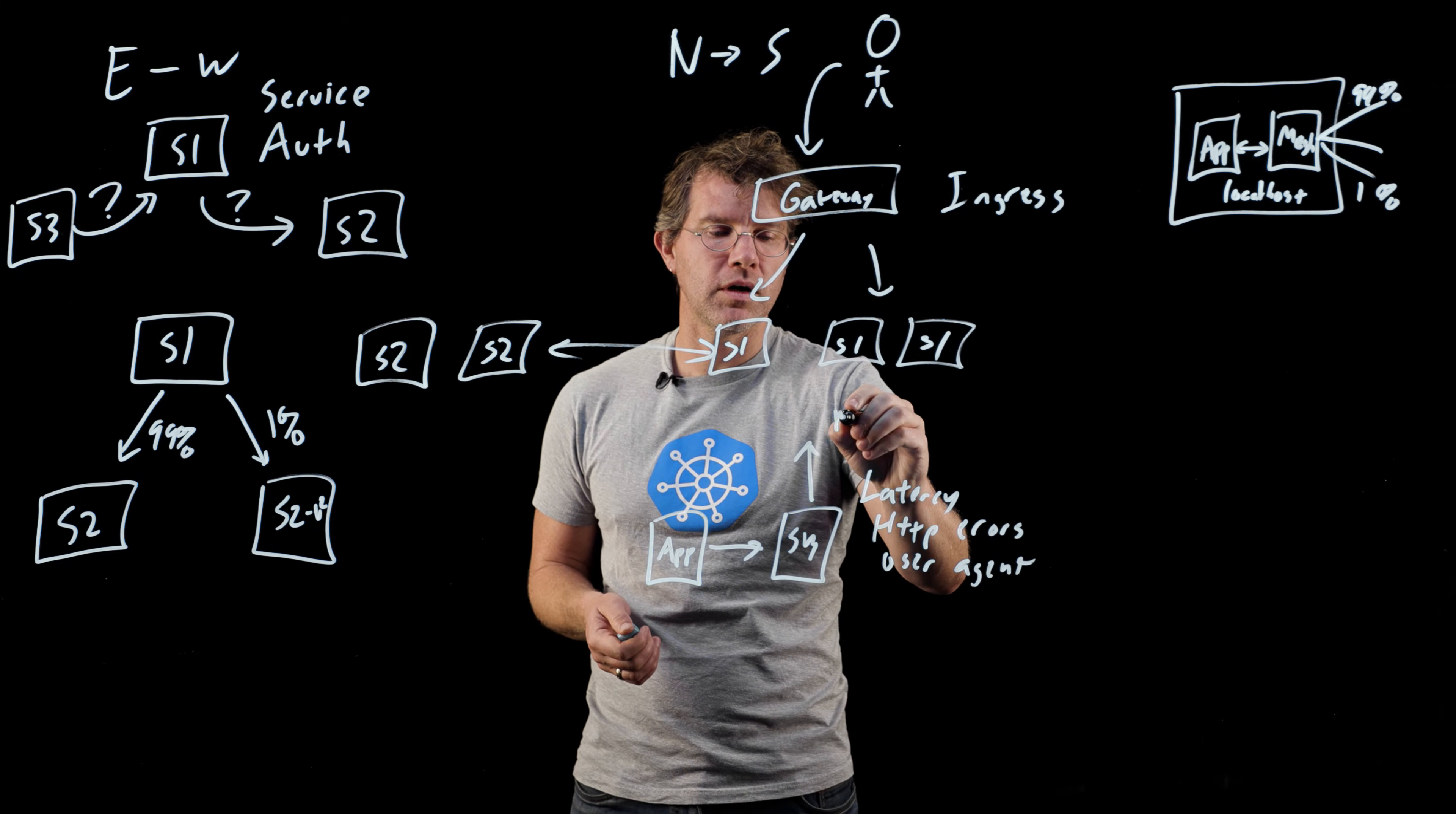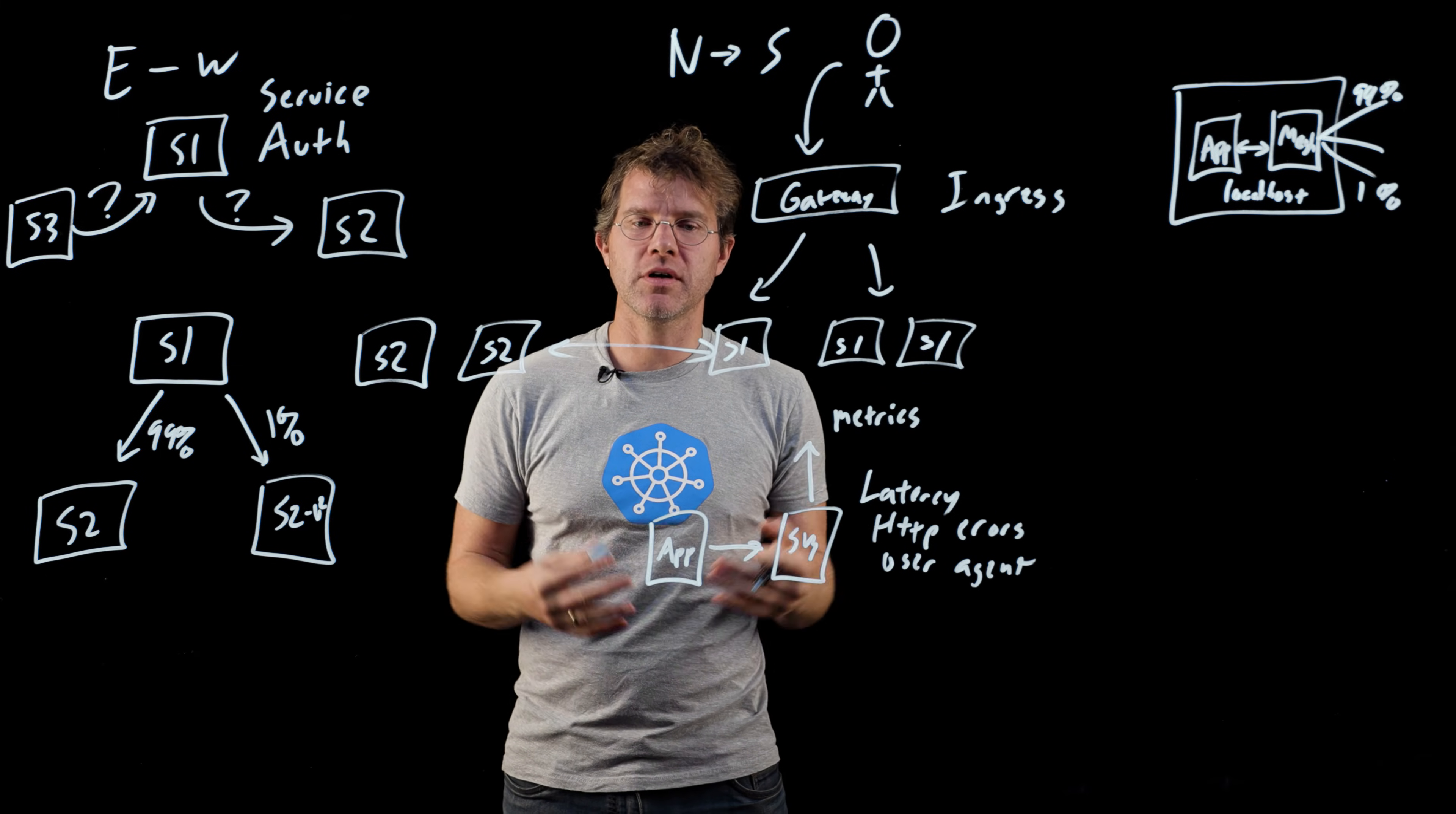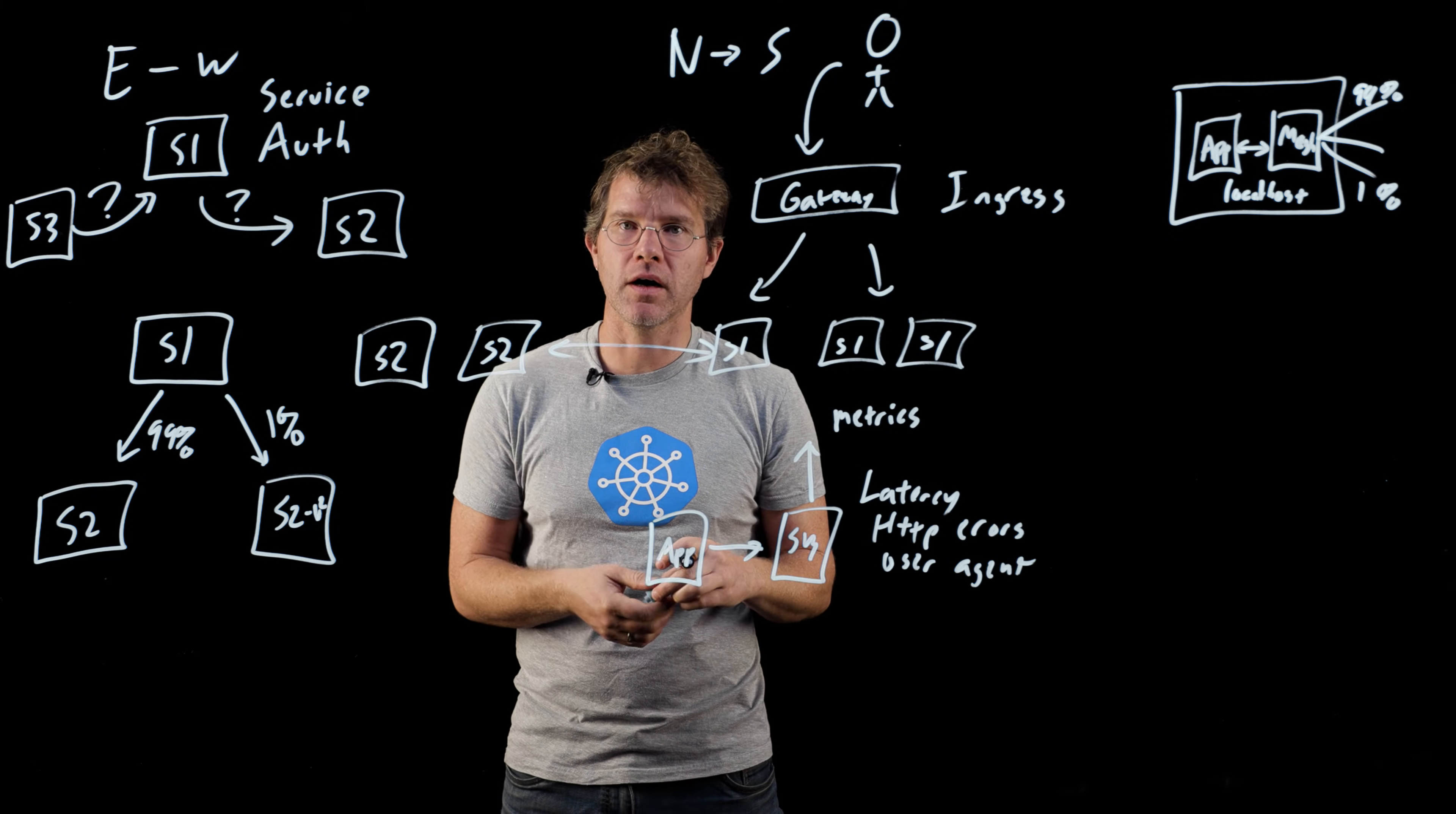Then push those things into a metric server, like Azure monitoring or an open source project like Prometheus. Without instrumenting your application at all, you can get really targeted metrics about if you're throwing 500s, how long a particular request is taking, what kind of clients are talking to you, again without modifying your code at all, simply by adding in this service mesh sidecar.